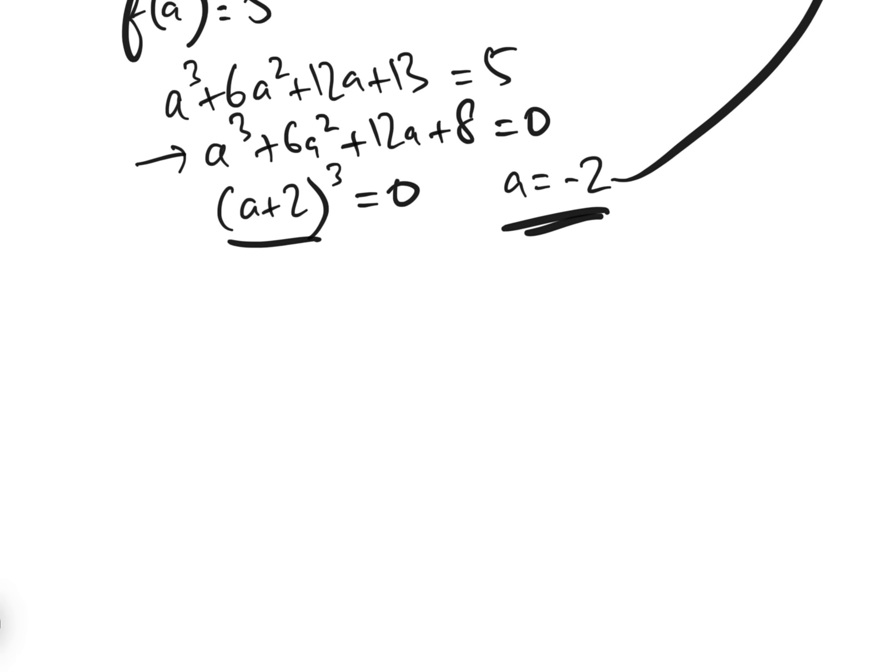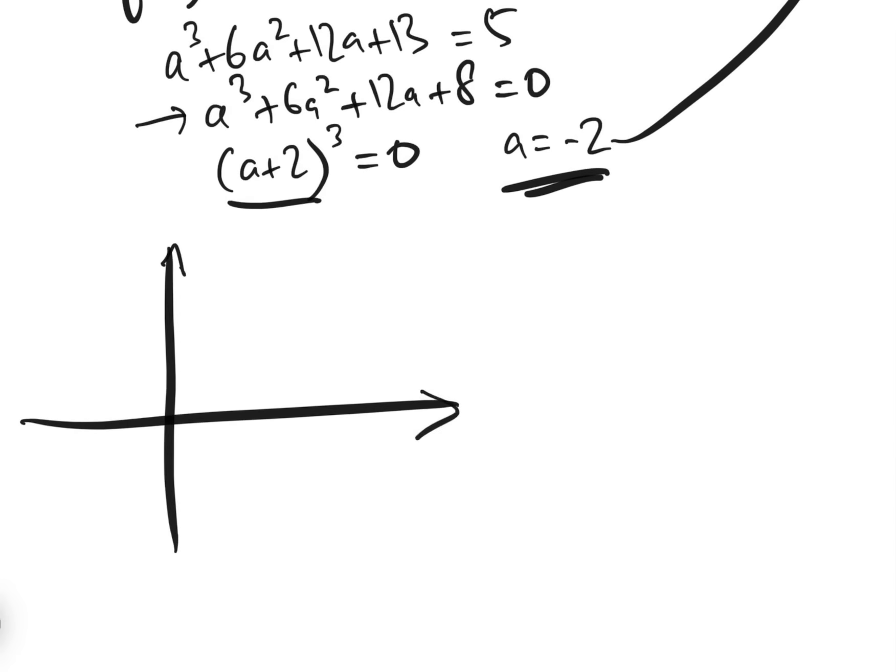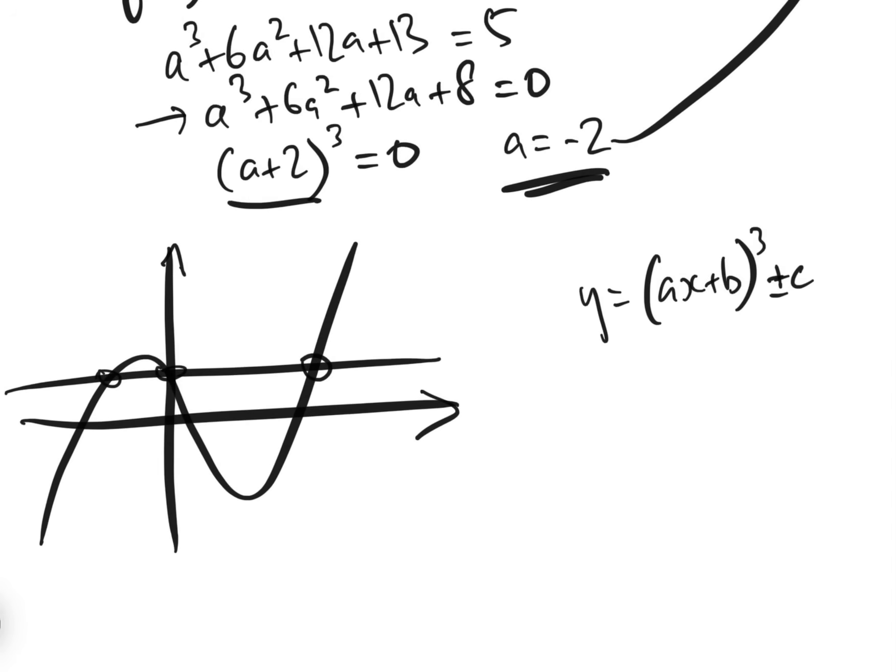First of all, it's worth noting that most cubics actually don't have an inverse, because most cubics are shaped like that, and so therefore they would fail the horizontal line test, and there wouldn't be a one-to-one mapping. But certain cubics do, and that's cubics of the form y equals (ax plus b) cubed plus or minus c. So if there's just an inflection point, for example the cubic looking something along the lines of that, then it does not fail the horizontal line test, and it can have an inverse.